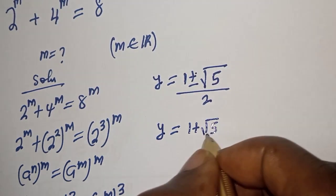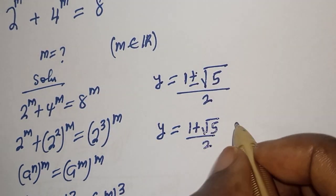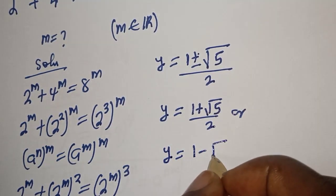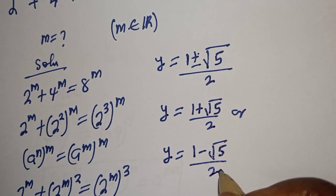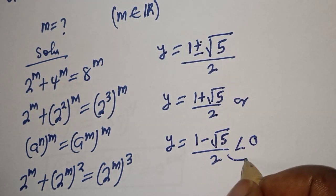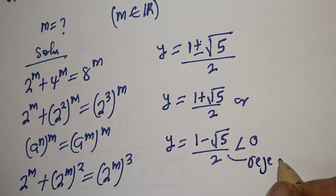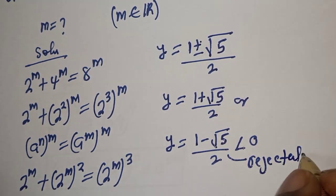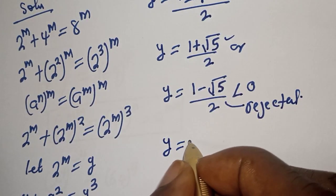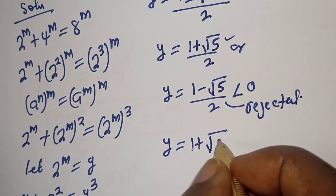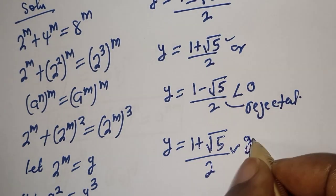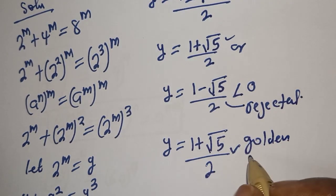So y is equal to 1 plus or minus square root of 5, over 2. This gives y is equal to 1 plus square root of 5 over 2, or y is equal to 1 minus square root of 5 over 2. But this second value is less than 0, so it is rejected. The only solution we have is y is equal to 1 plus square root of 5 over 2, which is also called the golden ratio.